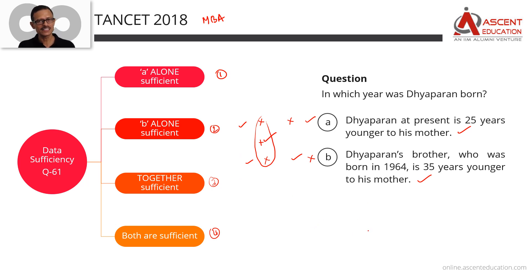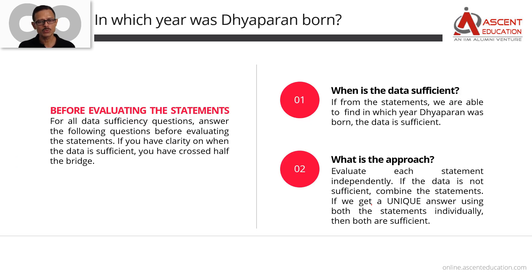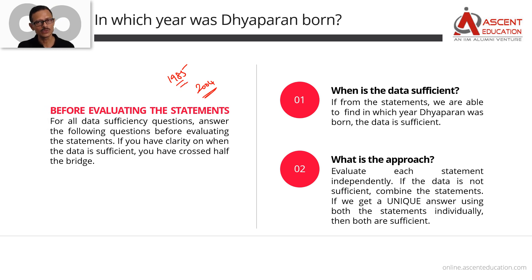Now, to get clarity on what the question is asking and when the data is sufficient: the question is, 'In which year was Dayavaran born?' If you can answer it, you need to produce a unique value — for example, Dayavaran was born in 2004. If you are able to find a unique value for the year in which he was born, the data is sufficient.